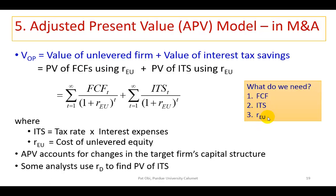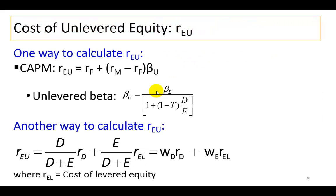If the firm uses no debt, then its value would simply be the present value of the projected free cash flows, and the cost of equity for such an unlevered firm would naturally be the cost of the unlevered equity. But with the use of debt, we would have to separately calculate the interest tax savings and then find their present value.